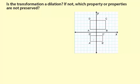We have two rectangles. ABCD is the preimage. A'B'C'D' is the image.